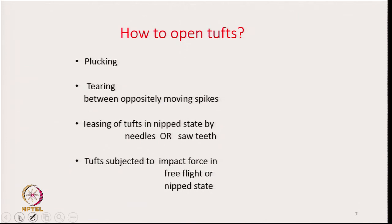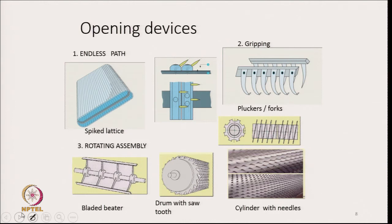How do we open tufts? The mechanisms used are: plucking; tearing between oppositely moving spikes; teasing of tufts in a nipped state by needles or short teeth; and tufts subjected to impact force in free flight or in a nipped state. These are the various actions which actually occur — plucking, tearing, teasing, or impact on the tufts — all resulting in some change in the volume, weight, or shape of the tufts.